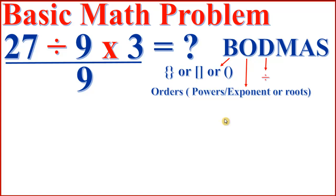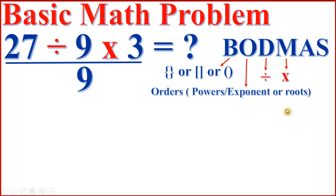So, B stands for brackets — first we have to calculate the expressions in brackets. Then we have to solve the exponent, after that division, then multiplication, then addition, then subtraction.